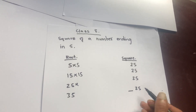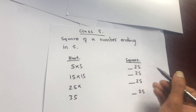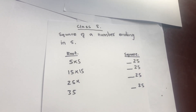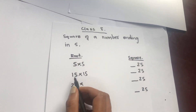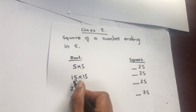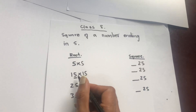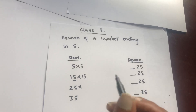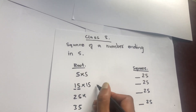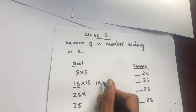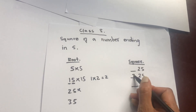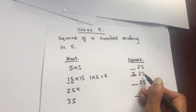Now, what we need to do is find the other digits. For example, to find the square of 15, look at the number in front of the 5, which is 1. Multiply that number by a number one greater than it: 1 into 2 equals 2. Therefore, the number before 25 in the square will be 2, so 15 squared becomes 225.